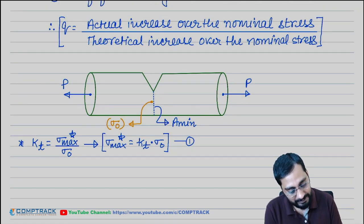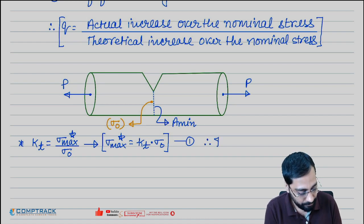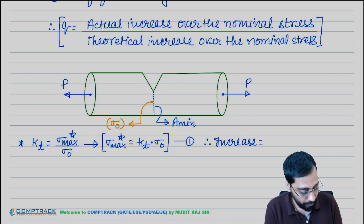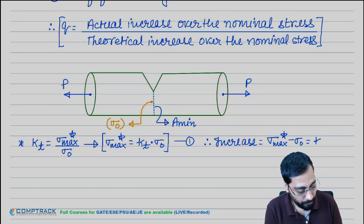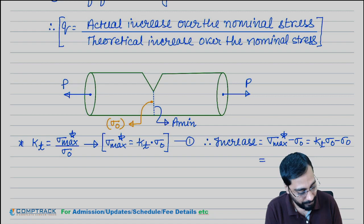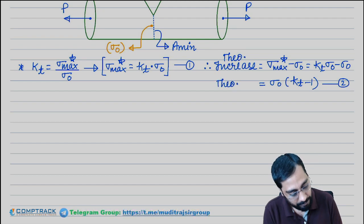How much will be the increase over the nominal stress? Theoretical increase: using the theoretical stress concentration factor, the increase will be sigma max star minus sigma nominal, which equals KT times nominal minus nominal, so it becomes sigma nominal times (KT minus 1). This is the theoretical increase.